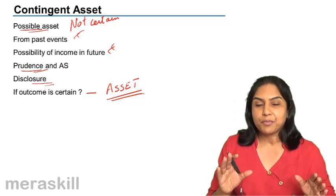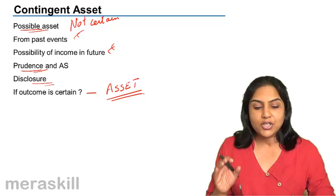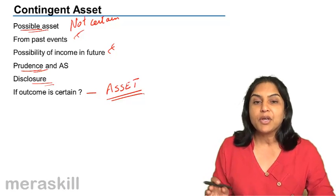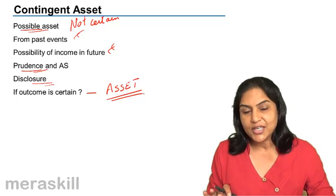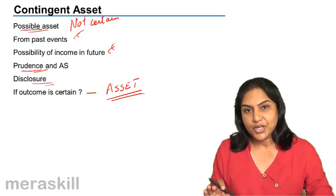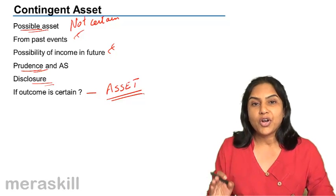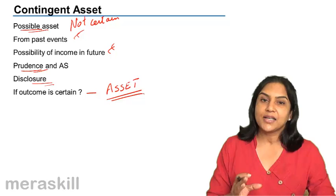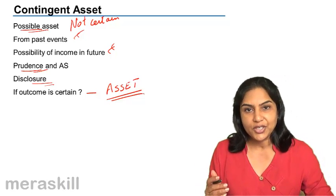Since we always are prudent, following the concept of conservatism, we do not recognize such asset, we do not recognize such income till we are more or less certain. Once it is certain, then it becomes an asset, it is no longer contingent.